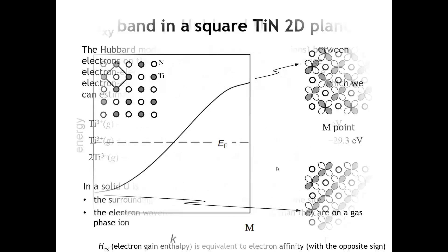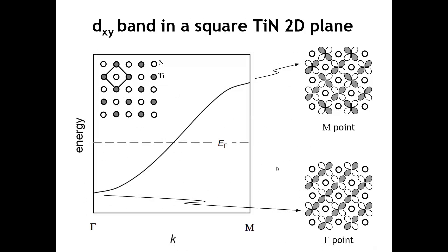Now, the other thing we want to look at is the width of the band. Let's take a titanium nitride sheet with titanium 3-plus. We can look at the overlap of the titanium DXY band at gamma, where it's bonding, and at M, where it's antibonding. This band has a certain width. In the Hubbard model, we're going to compare the bandwidth to the size of the Hubbard U, the electron-electron repulsions.